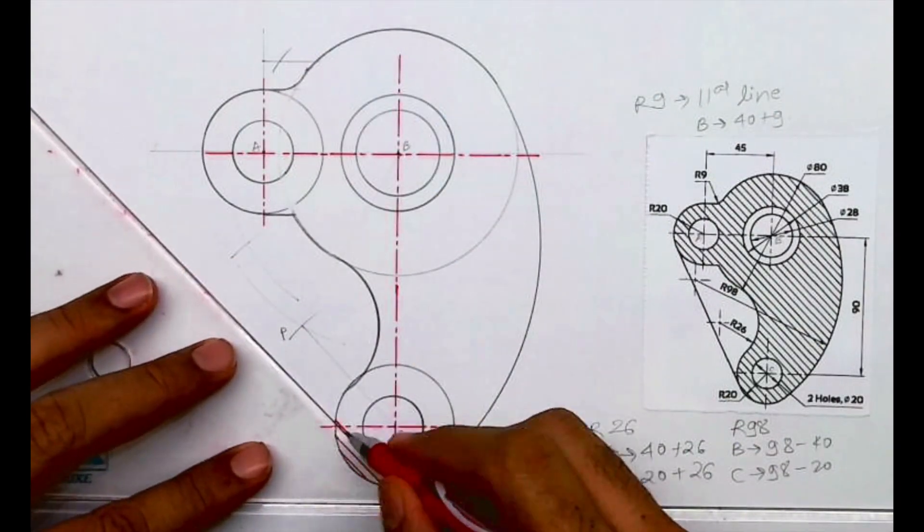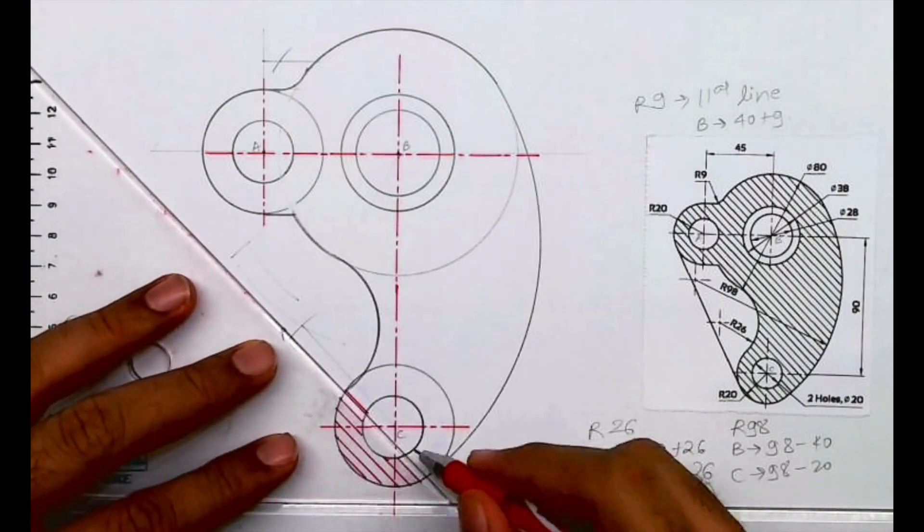Then we will draw these lines, hatching lines inclined at 45 degrees.